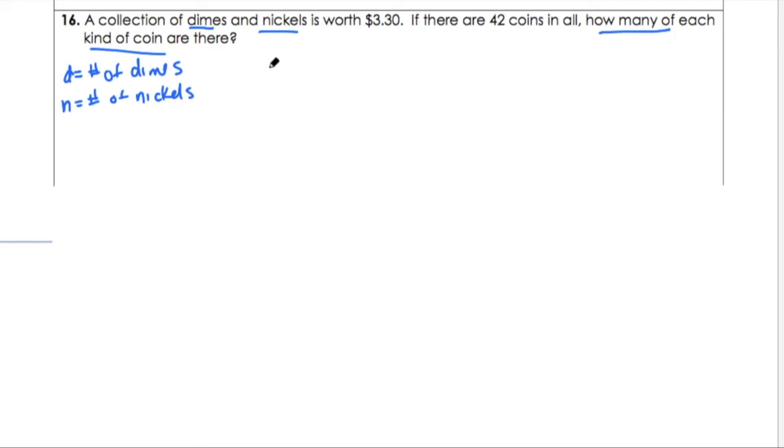Let's take different pieces of this at a time. The easiest part actually is that there's 42 coins in all. Well, if d is the number of dimes and n is the number of nickels, then we must have that d plus n is 42. And that's our first equation.